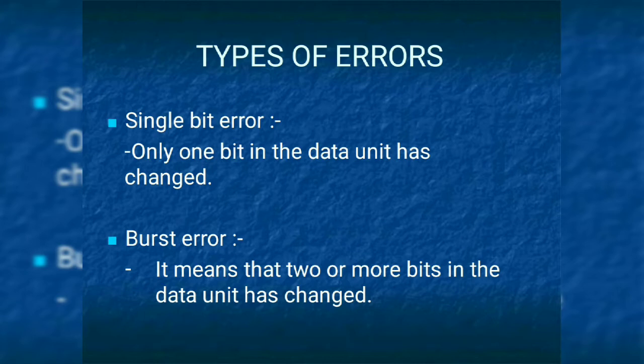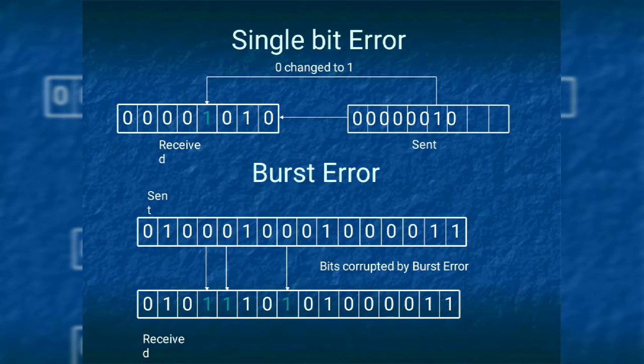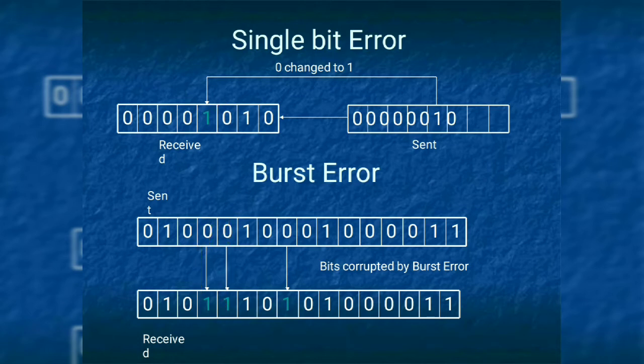Next, there will be types of errors. There will be a single bit error and the burst error. Single bit error means there will be only one bit going to change — here 0 is going to change into 1. A burst error means there are two or more bits going to change while sending the information from transmitter to receiver.